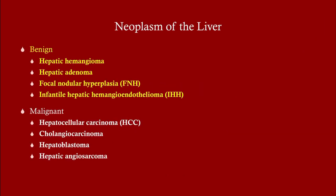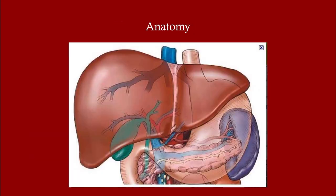We're going to be focusing on four liver tumors. The two most important for your exam are the hepatic adenoma and focal nodular hyperplasia. They're not the two most common — hepatic hemangioma is the most common — but these are the two that most commonly come up on your exam.